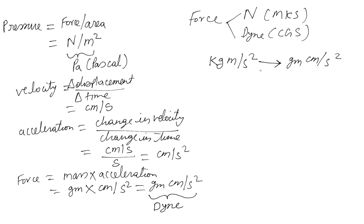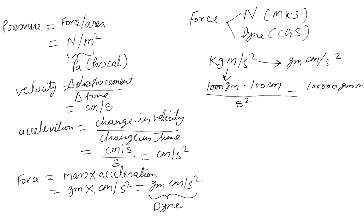To find the conversion factor from Newton to dyne, we replace the quantities. One kilogram equals one thousand grams, and one meter equals one hundred centimeters; time is unchanged. So one Newton equals one thousand grams times one hundred centimeters per second squared, which is 100,000 gram centimeters per second squared — that is 100,000 dynes, or 10 to the power of 5 dynes. So 1 Newton equals 10⁵ dynes.